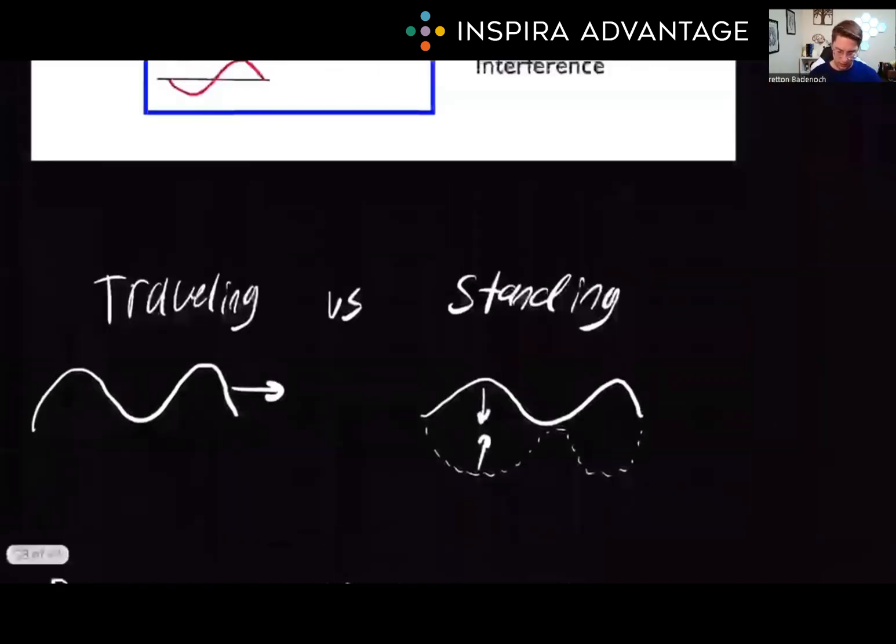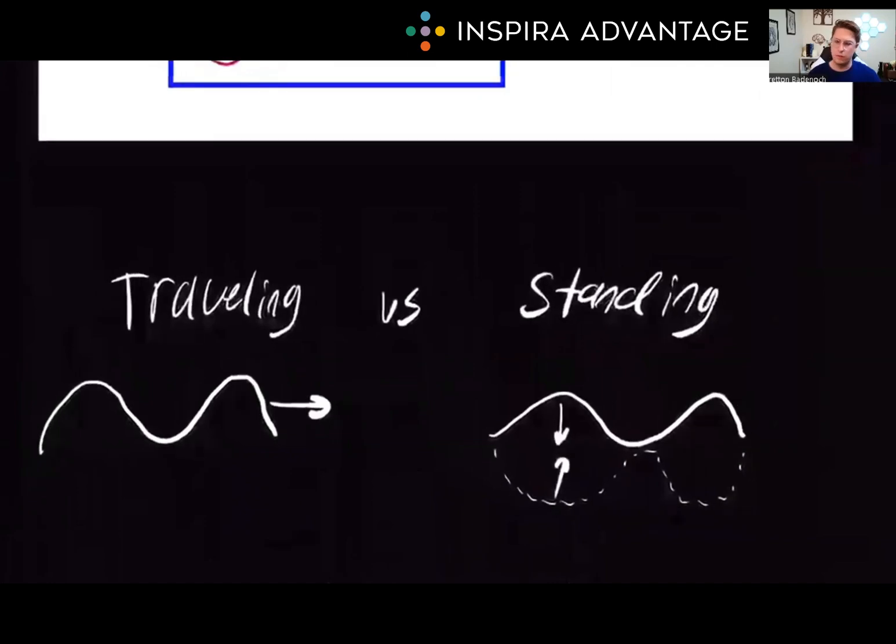Now moving to traveling and standing waves. This is kind of difficult to show on a 2D surface, so I'll try and use my arms as well. Pay attention to the top corner here. A traveling wave is going to continuously shift points of maximum and minimum displacement. It's a wave that is moving through space. Look at me in the top little screen. If you missed it, rewind there.